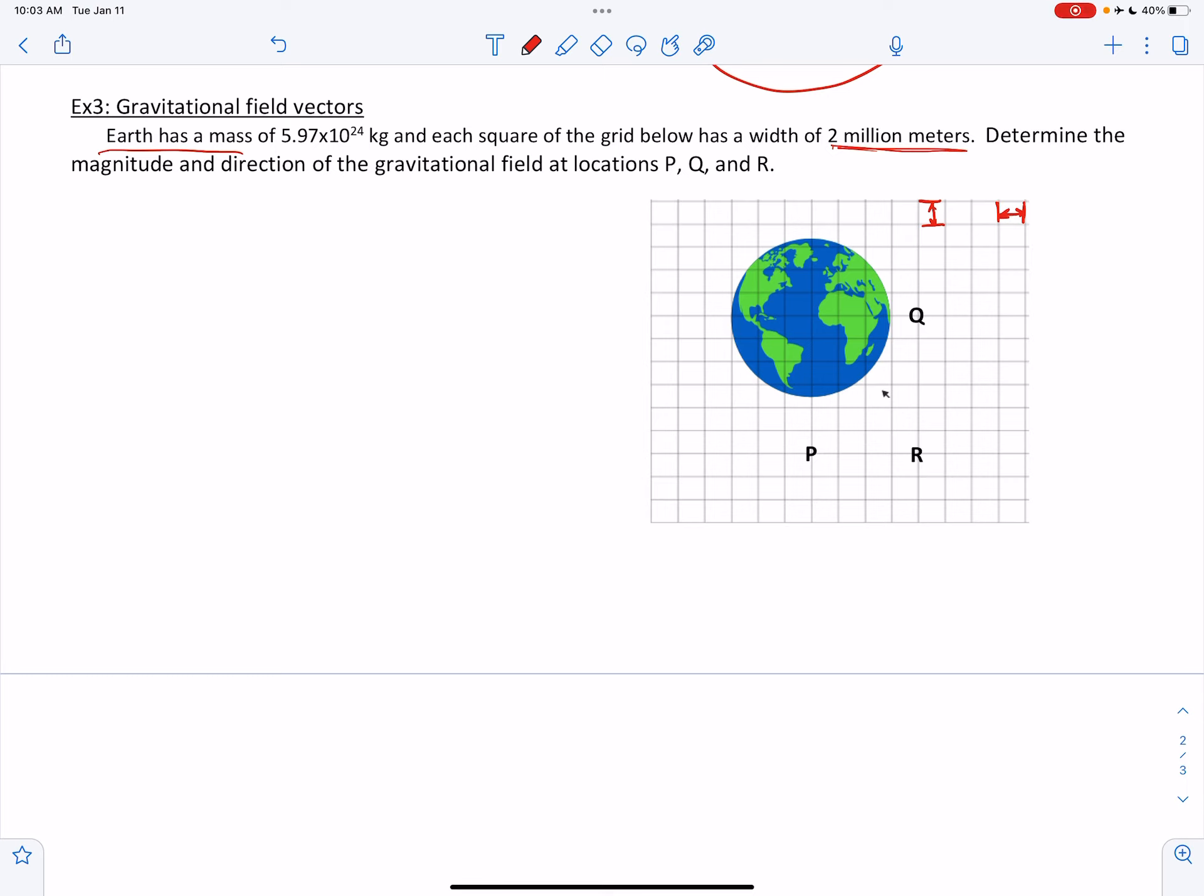Determine the magnitude and direction of the gravitational field at locations P, out here, Q, and R. Okay, three points in space outside of Earth.